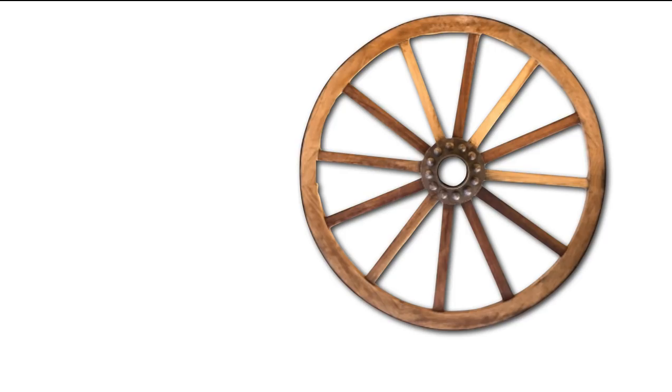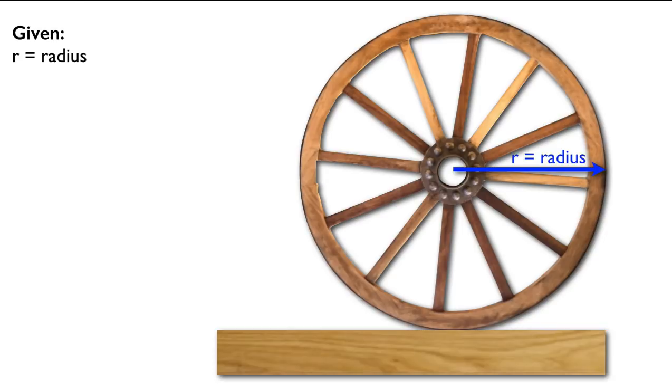So we're going to start off with the wheel, and we're going to say the radius is R. We're going to then place that wheel on a beam made of hickory. I'm going to use the letters H and B, and that beam is of length D.